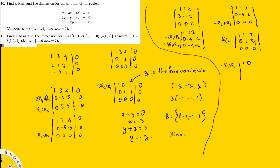So the reduced row echelon form is: 1 0 1/2 / 0 1 3/2 / 0 0 0. We've brought this into reduced row echelon form. For the span, the basis consists of the rows with leading ones — the first and second rows of the original matrix.